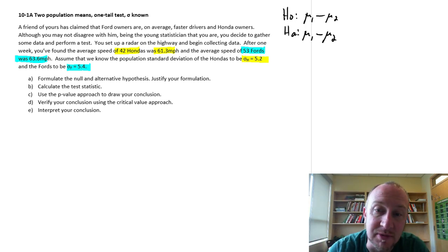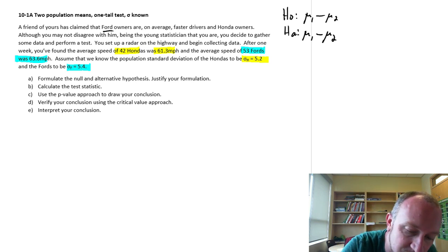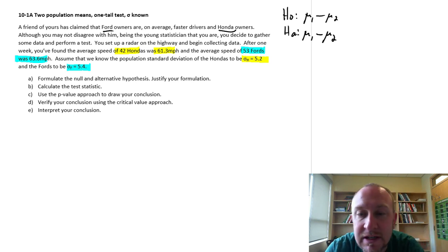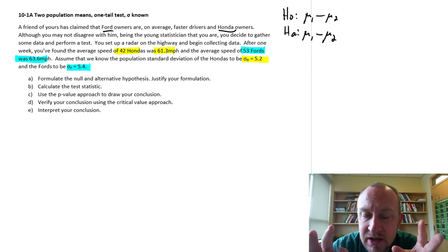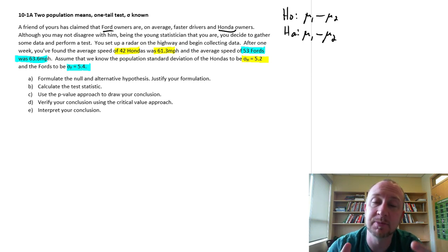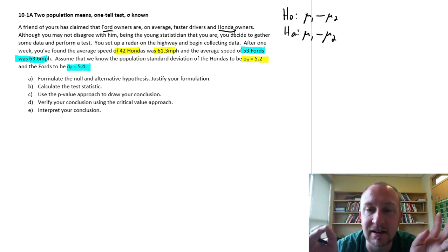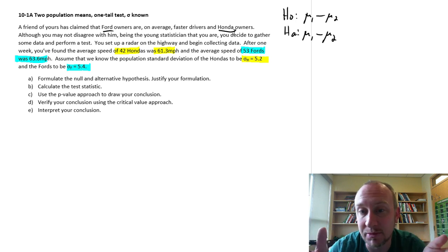Now of course the question comes up, well here I've got mu1 and mu2. I've got two populations, the Ford owners and the Honda owners. Which one is which? In other words, which one am I going to define as population one? Which one am I going to define as population two? That decision can be arbitrary. You don't necessarily have to put a lot of thought into that decision. However, whatever you decide will have an impact on your test. Because now when we have two populations, the distinction between a lower tail test and an upper tail test becomes somewhat arbitrary.